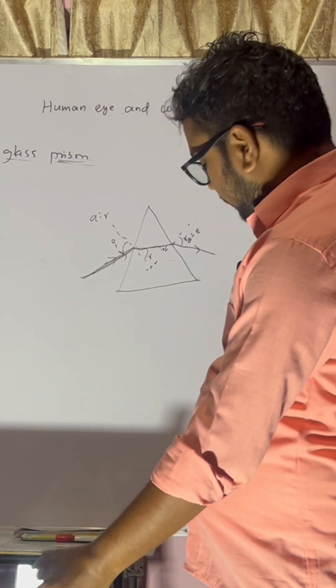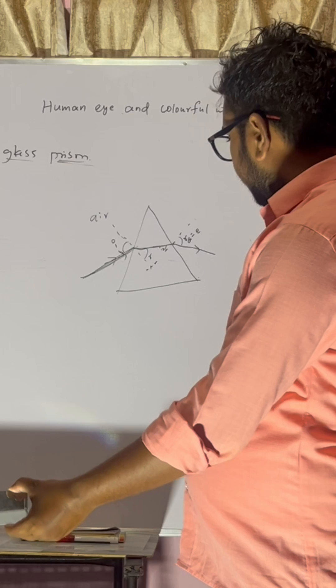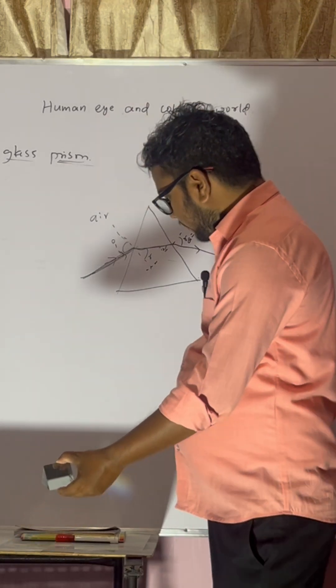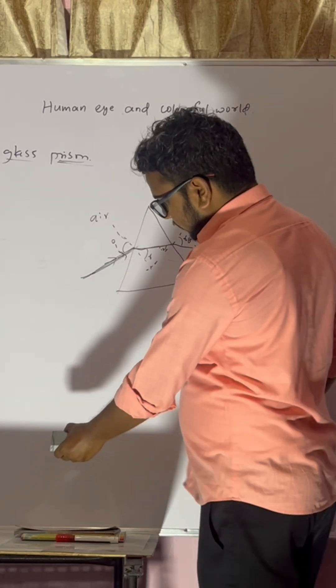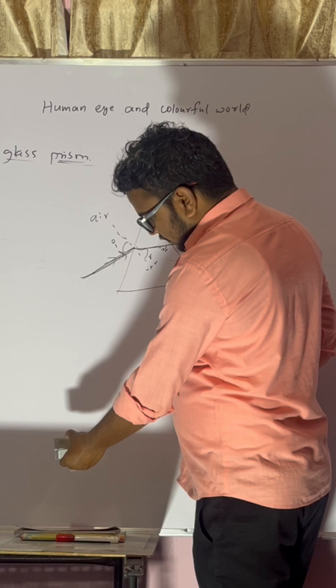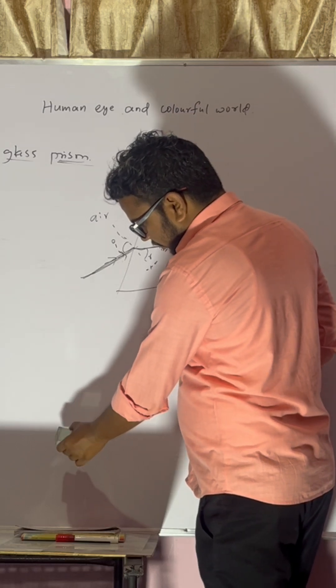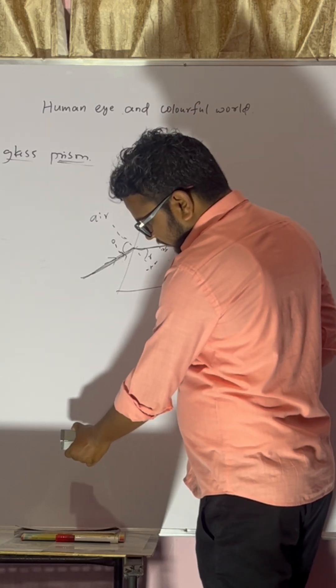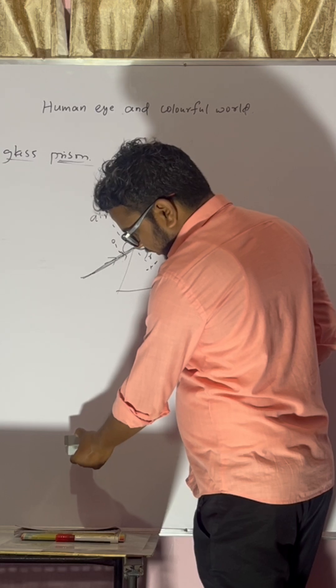Now if we have this prism, so what it is useful for? See, now you can see this dispersion of light. Here various colors are splitting into its constituent colors.